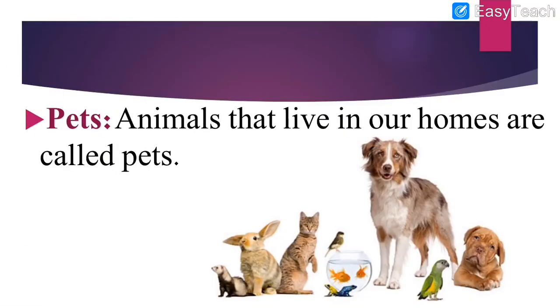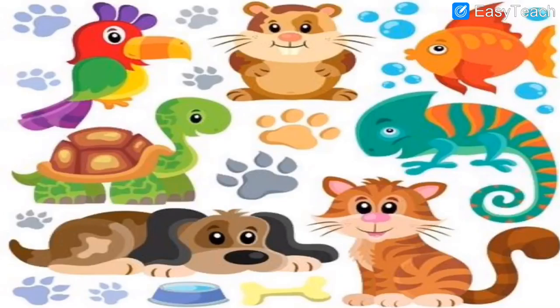After that, we had seen pets. What are pets? Animals that live in our homes are called pets. This is one more important keyword. Animals that live in our homes like dog, cat, etc. are called pet animals. We had seen images of different pet animals like fish, cat, dog, parrot, etc.